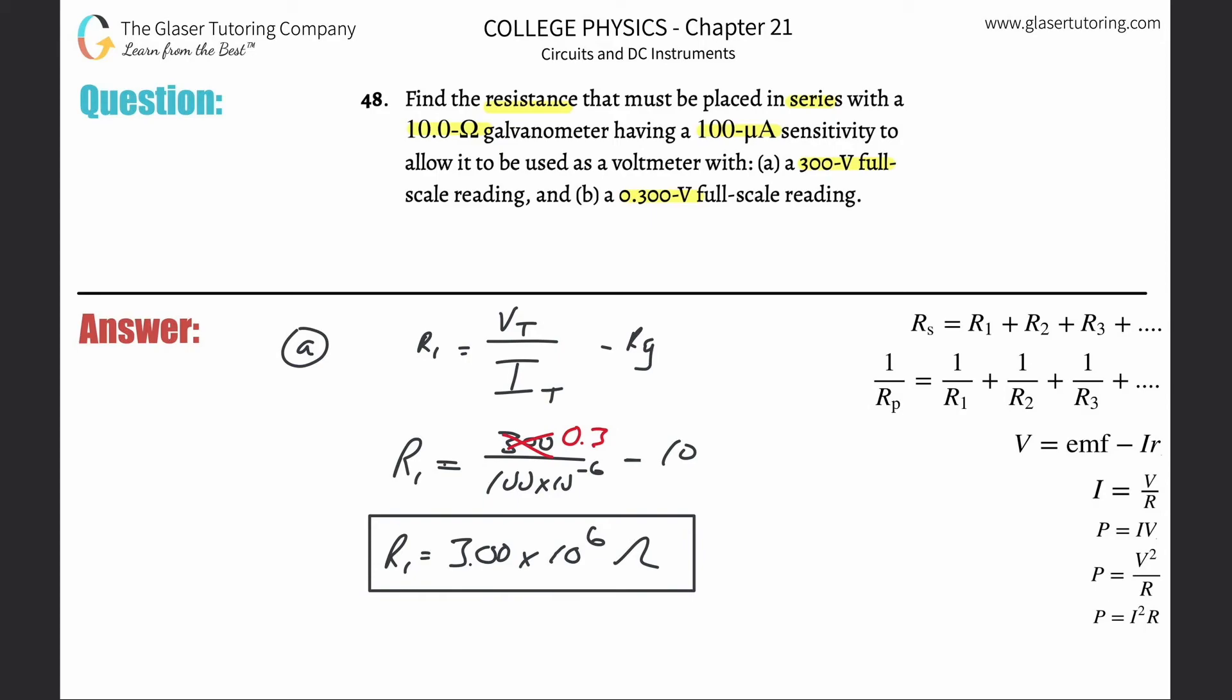So it's 0.3 divided by 100 times 10 to the minus 6 minus 10, and we get a value of about 2.99. So 2.99 times 10 to the third ohms, that'd be about 2.99 kilo ohms.